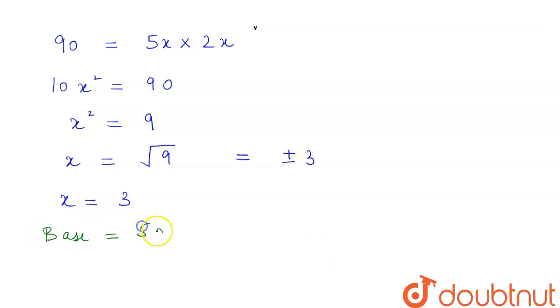So the base is equal to 5x, this will be equal to 5 into 3, which is equal to 15 centimeters. And our height will be equal to 2x, which is equal to 2 into 3, and this will be equal to 6 centimeters.